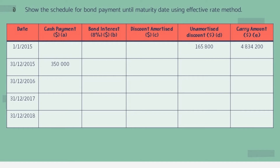For the second requirement, we show the bond payment schedule until maturity using the effective rate method. We construct a table with six columns and six rows to record payments until 2018. The columns are: Date, Cash Payment, Bond Interest at 9% market rate, Discount Amortized, Unamortized Discount, and Carrying Amount.